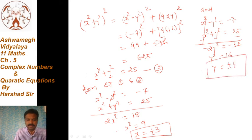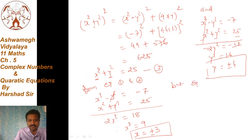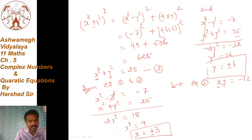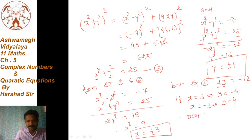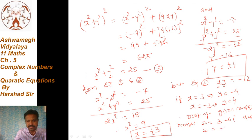अब हमें x and y की choice करनी होगी। We know from equation 2 that xy = -12. जब दोनों का multiplication negative हो, तो any one of them may be negative। If x = 3, then y = -4; and if x = -3, then y = 4. So the square roots of the given complex number are: z = 3 - 4i and z = -3 + 4i — ये दोनों roots होंगे।